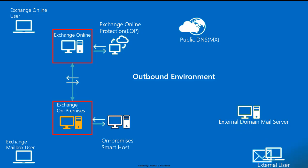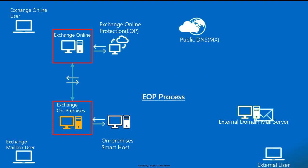All mail flow between EOP and the external world happens through SMTP port 25. The connection between Exchange Online Protection and the smart host always uses TLS, which means you need a public certificate with the SAN entries of your domain. If you don't have a TLS certificate configured, mail flow between the on-premises smart host and Exchange Online Protection will not work.